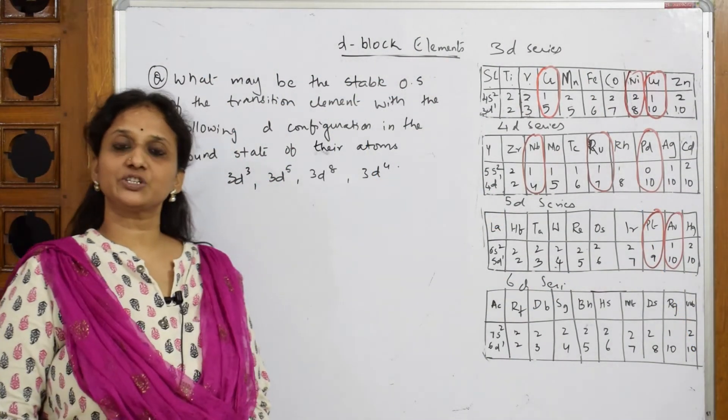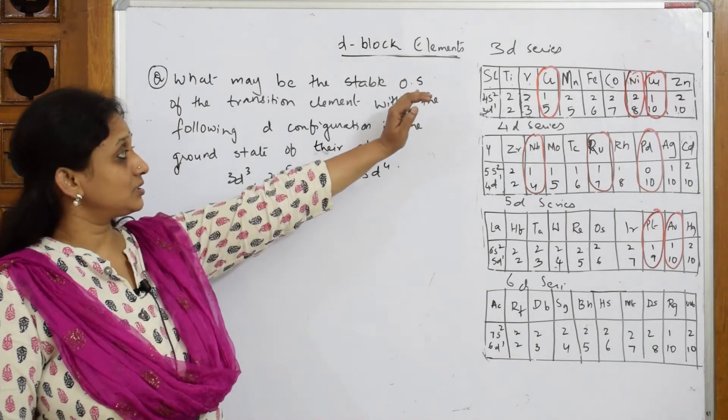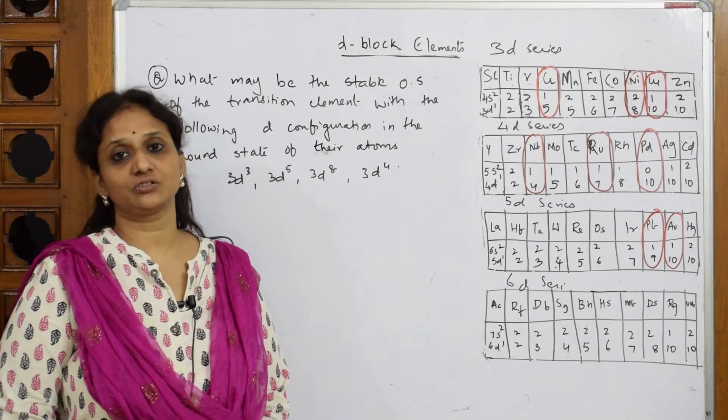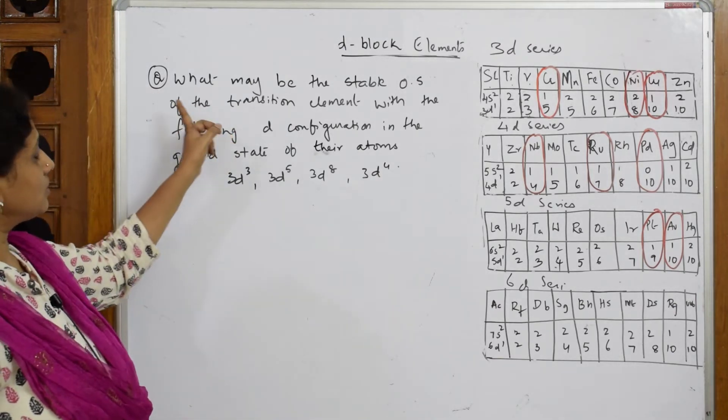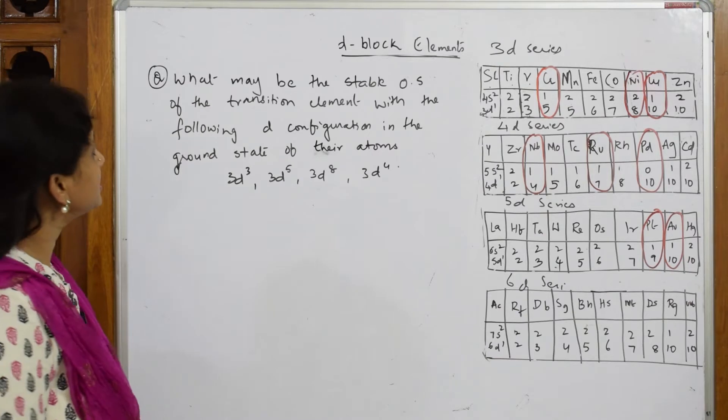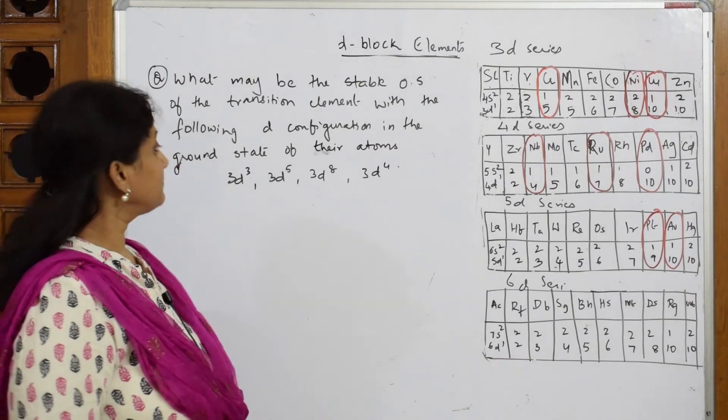Let us come back and see one more question related to electronic configuration. I'm going to compare or check the oxidation states using electronic configuration. The question asks: what may be the stable oxidation state of the transition element with the following d-configuration?